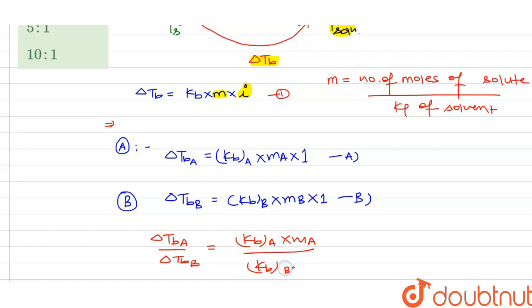KbB multiplied by mB. We know that mA and mB are the same, so they get cancelled out. What we will get is the ratio of the ebullioscopic constants with respect to A and B, and